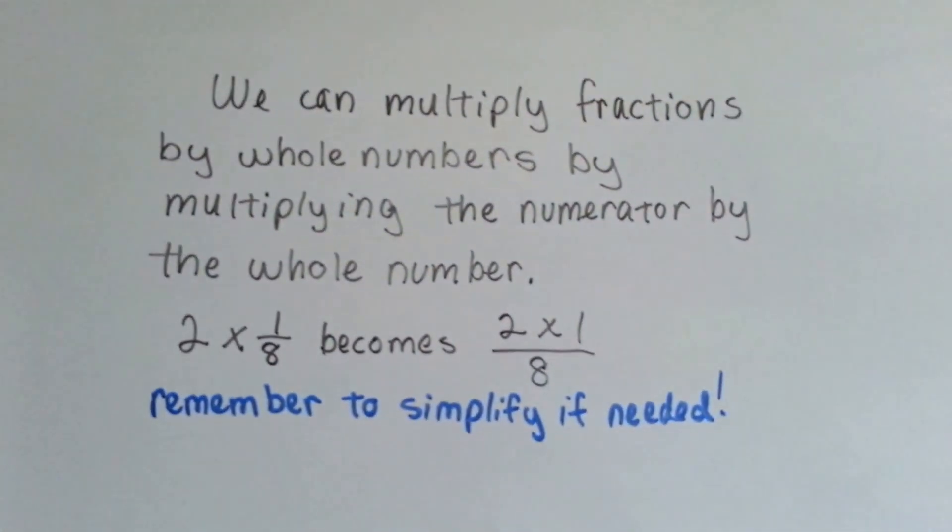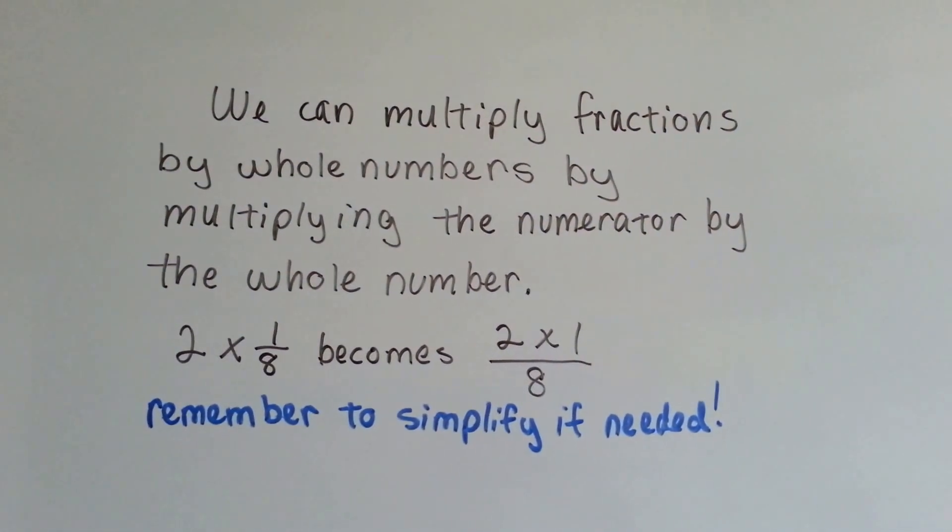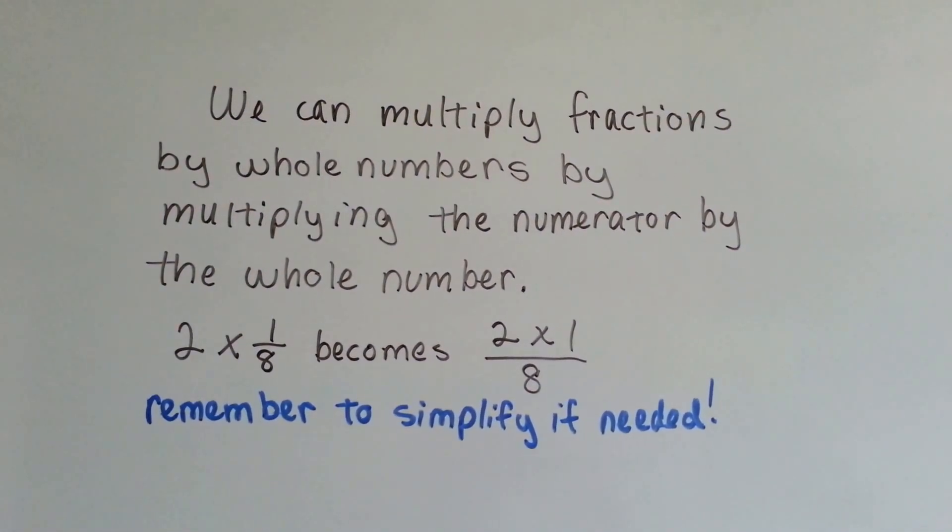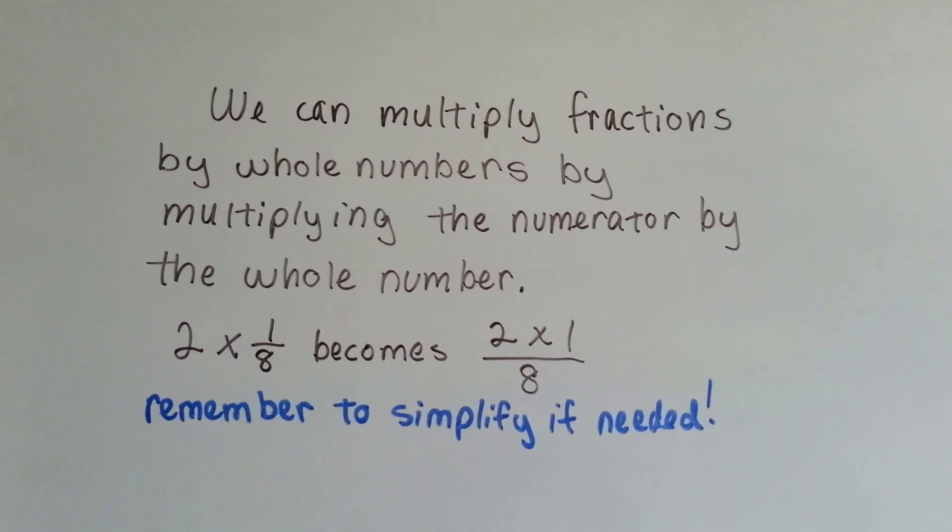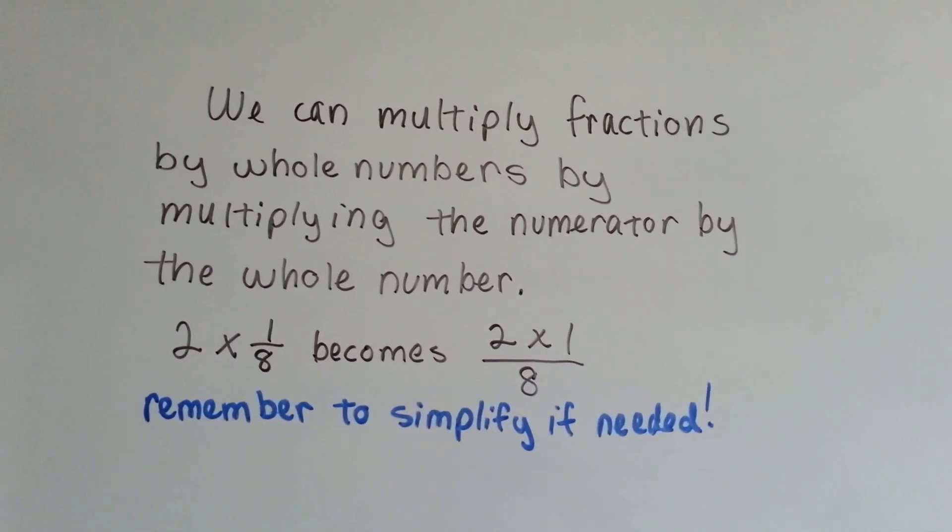We can multiply fractions by whole numbers by multiplying the numerator by the whole number. 2 times 1 eighth becomes 2 times 1 over 8. Just remember to simplify if needed.